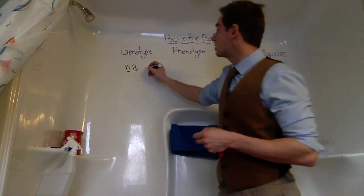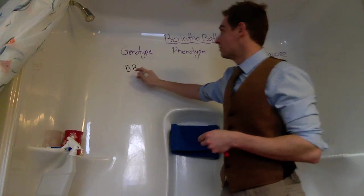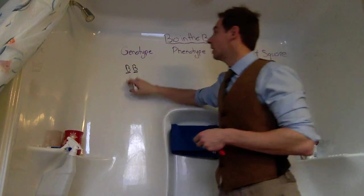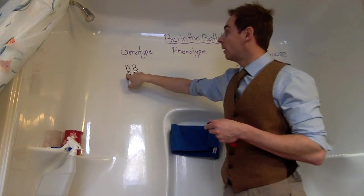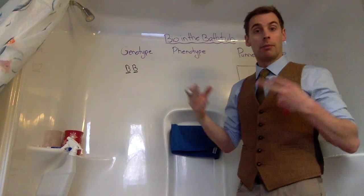we call this homozygous dominant because both of these traits have a dominant gene. The genes usually are represented by a capital letter. They're dominant, they're larger.